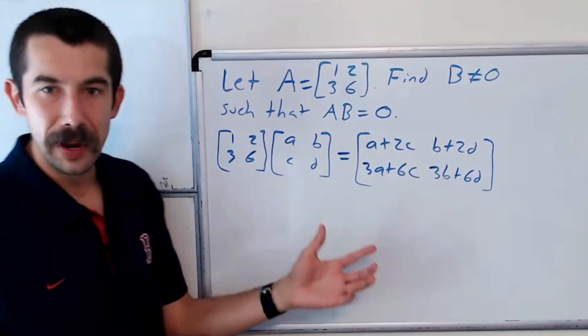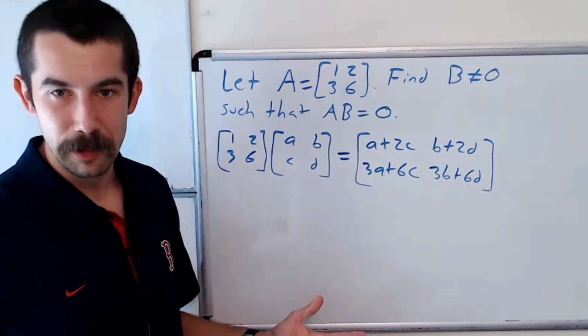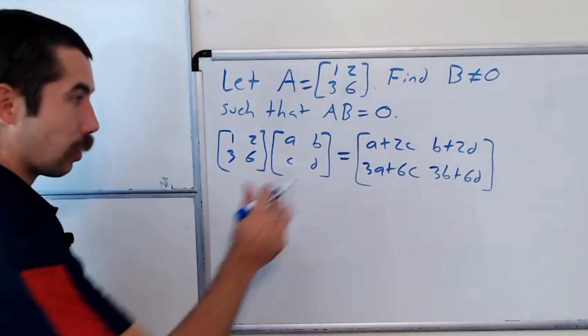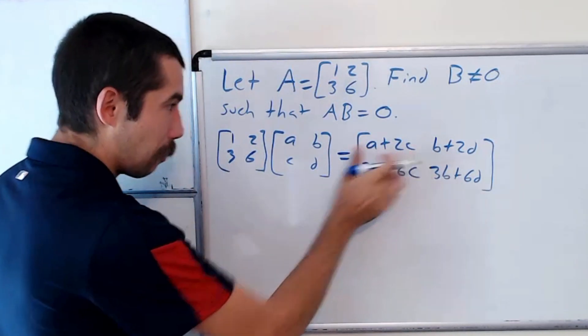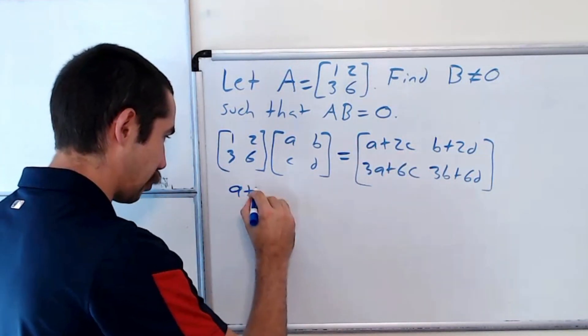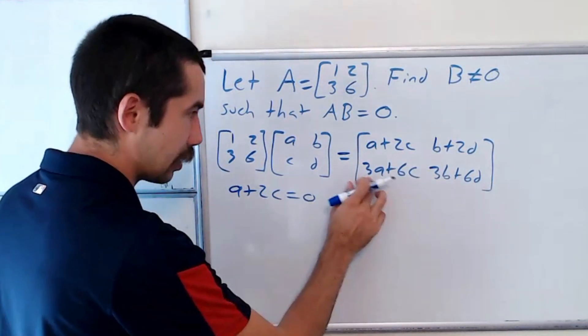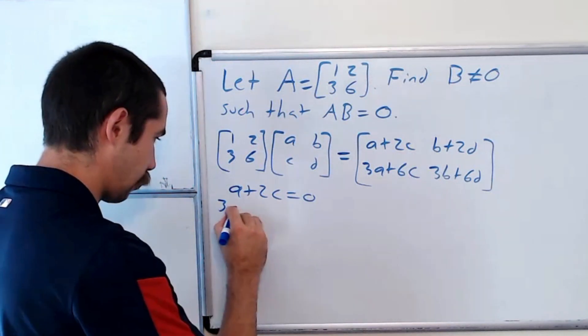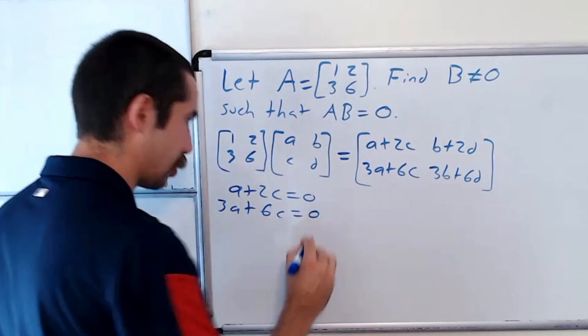Right, and we want this matrix to be the all-zeros matrix. And so, in particular, we have a plus 2c equals 0, and 3a plus 6c is equal to 0.